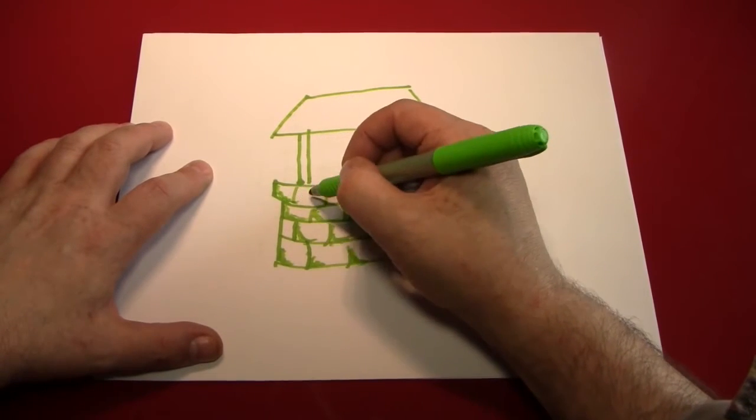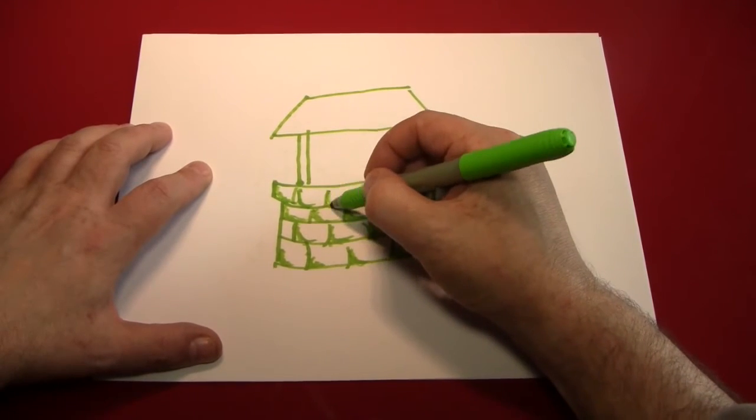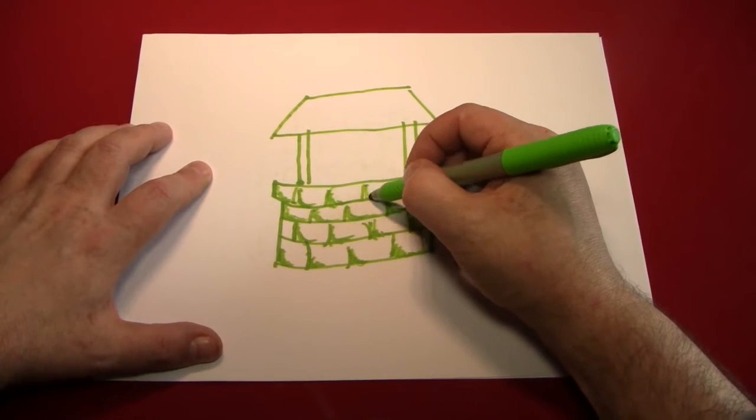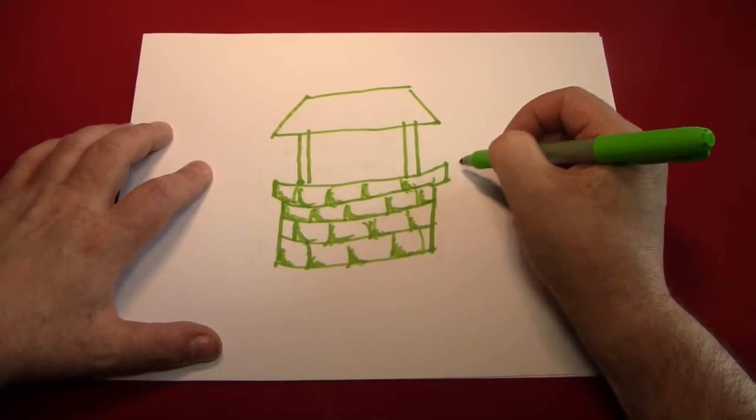We'll do that up here, too. And what we're doing is we're creating the stone texture, the pattern, the elements of this wishing well, which is made out of stone.